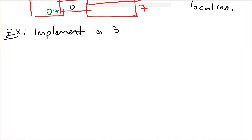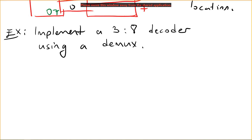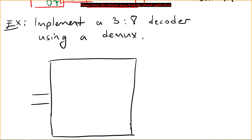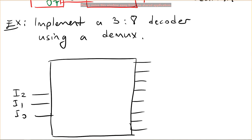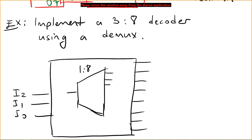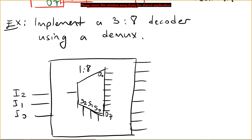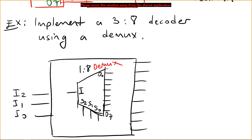Now let's implement a three-to-eight decoder using a demultiplexer. We draw the decoder with three input lines i2, i1, i0 and eight outputs. Inside we use a one-to-eight demultiplexer, which has eight outputs and three select lines. Recall that a demultiplexer passes its input signal to one of the selected outputs.